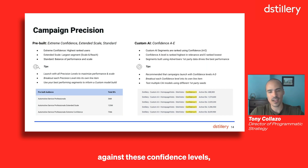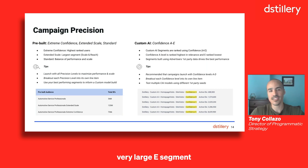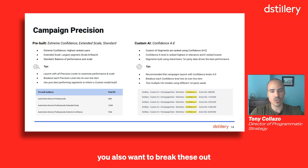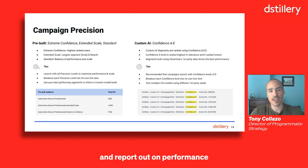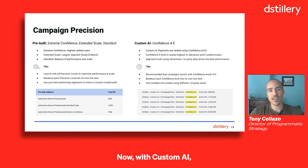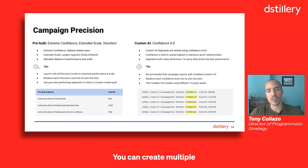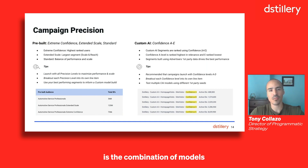When activating against these confidence levels, it's recommended that you start with confidence levels A through D and reserve the very large E segment for extended performance and reach only if you need it. Just as with the pre-built strategy, break these out into individual line items so you can apply value to each and report out on performance. With custom AI, you can get creative and test out various first-party seed sets — don't just create one model. You can create multiple and test which one performs best. Usually, it's the combination of models that really drives the most value for our clients.